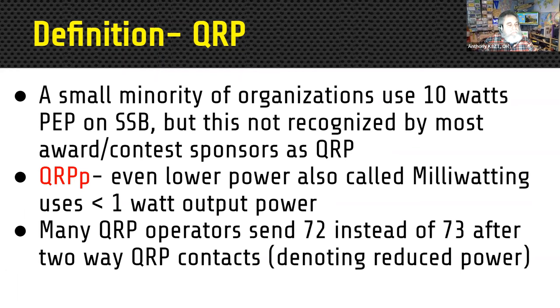A funny little side note: many QRP operators send the number 72 instead of 73 after two-way QRP contacts, denoting the reduced power — they reduce the number by one.